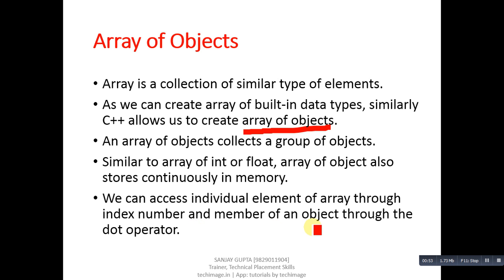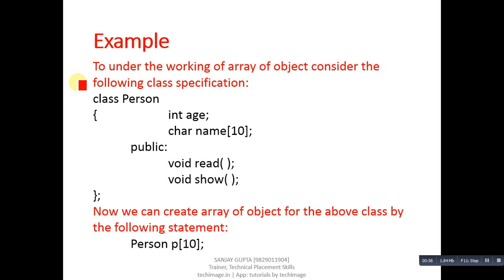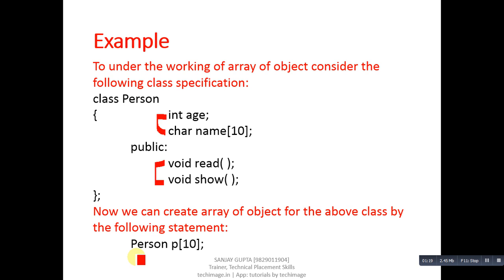We can access individual elements of the array through an index number, and members of an object through the dot operator. Now I will explain the concept of array of objects with the help of an example. You can see a class specification here — the name of the class is Person, it has two attributes: name and age, and two methods: read and show. The last statement shows how we can create an array of objects, where P is an array of objects capable of storing information of 10 persons.